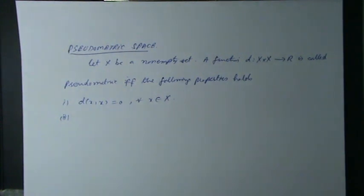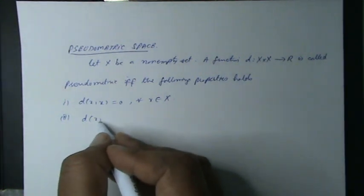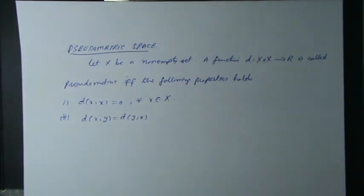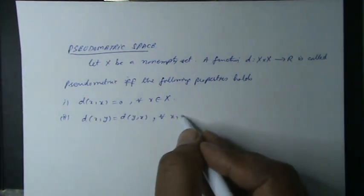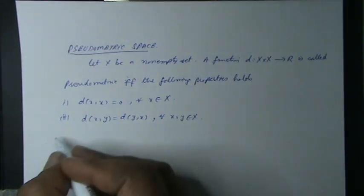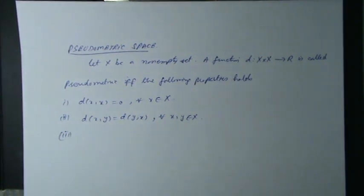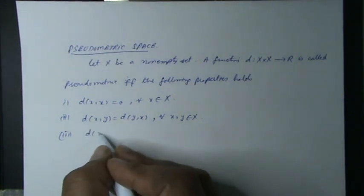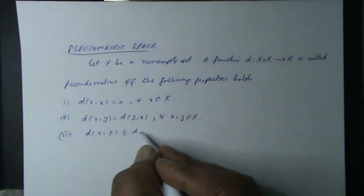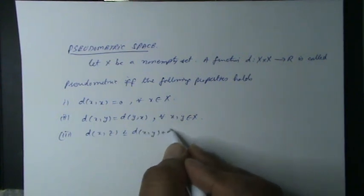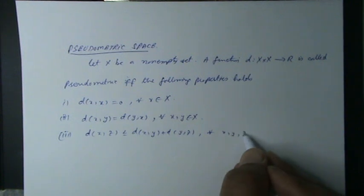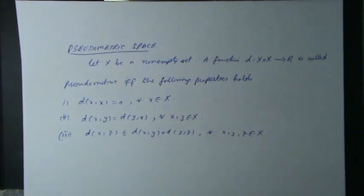Second property: distance of x comma y is equal to distance of y comma x, for all x, y belonging to non-empty set X. Third property: distance of x comma z is less than or equal to distance of x comma y plus distance of y comma z, for all x, y, z belonging to non-empty set X.